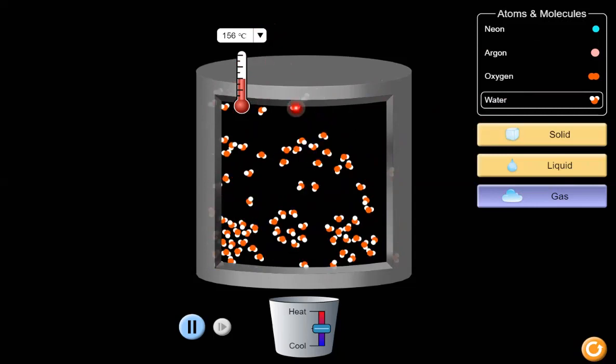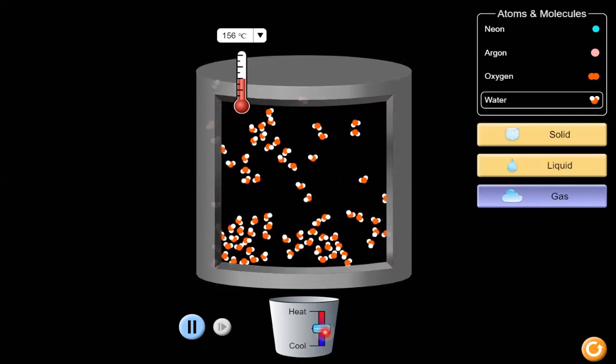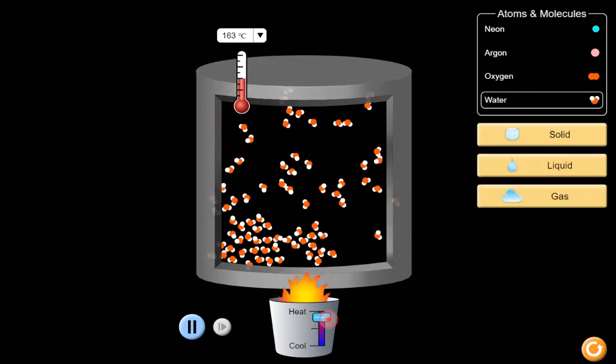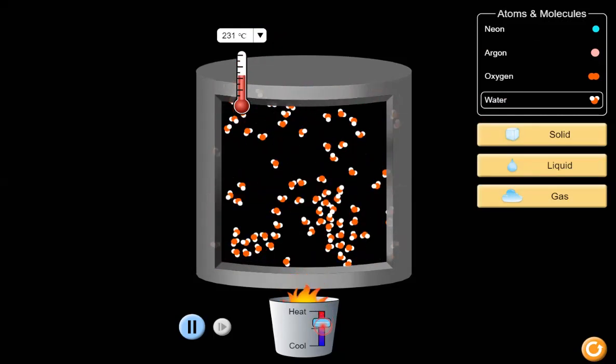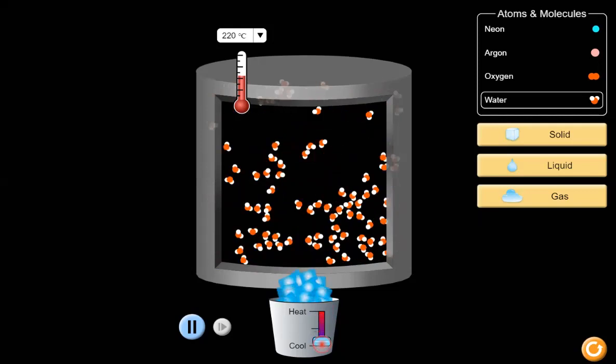Then we can add or remove heat at the bottom by adding the flame to add heat or removing heat by adding ice.